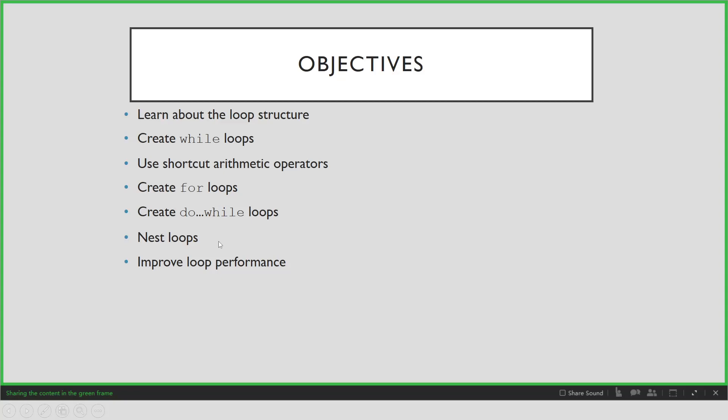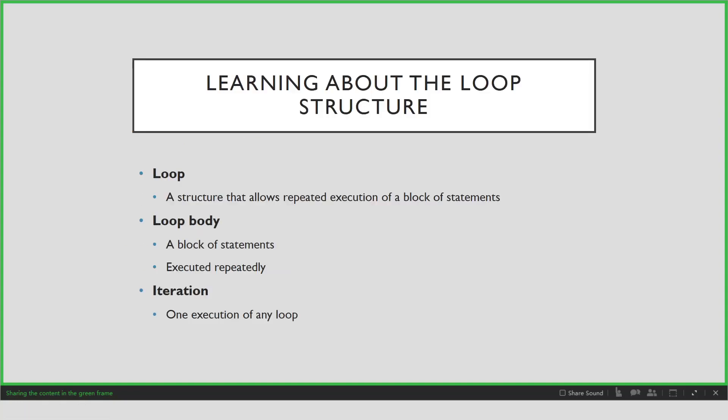So first, what is a loop? According to the definition here, it is a structure that allows repeated execution of a block of statements, let us say, a hundred times or a thousand times, because it's not efficient to write the statements a hundred times or a thousand times. It takes time. So for that, we have to use the loop structure or a repetition structure.